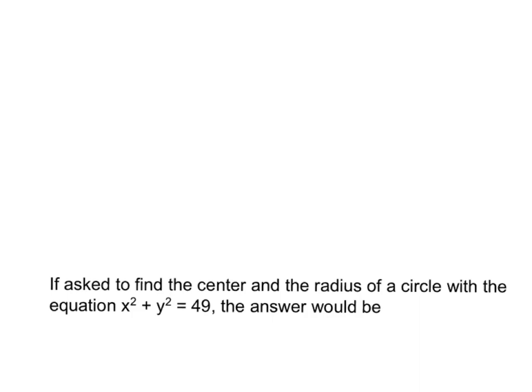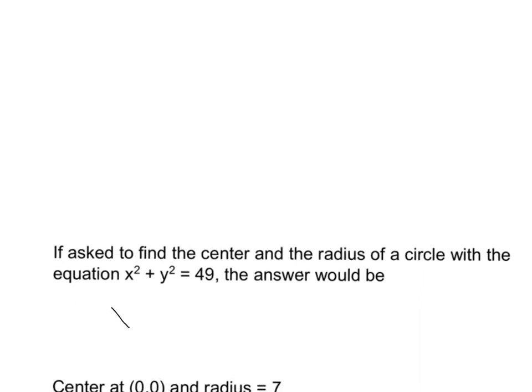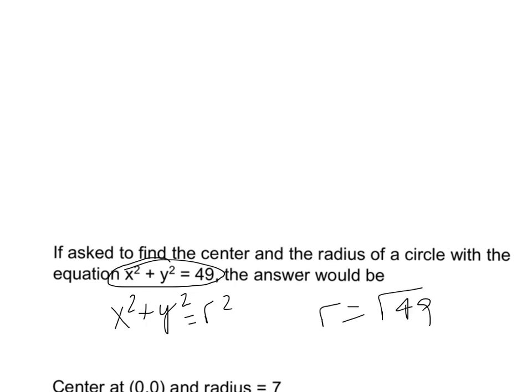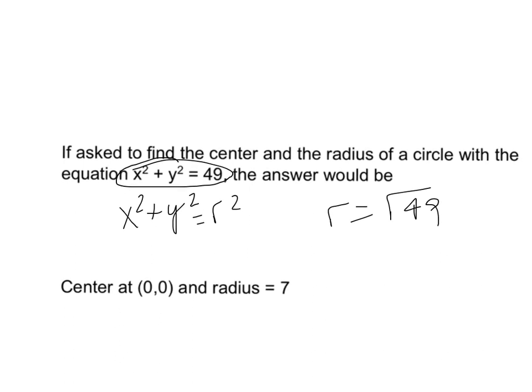Sometimes you're asked to find the center and radius when given the equation. Write the formula x squared plus y squared equals r squared. Because the equations match, the center is at (0, 0), and the radius equals the square root of 49, which is 7.